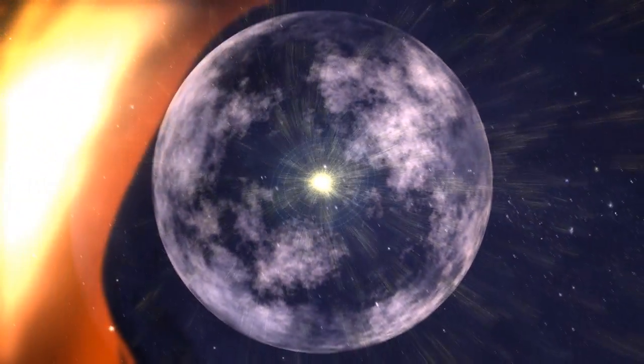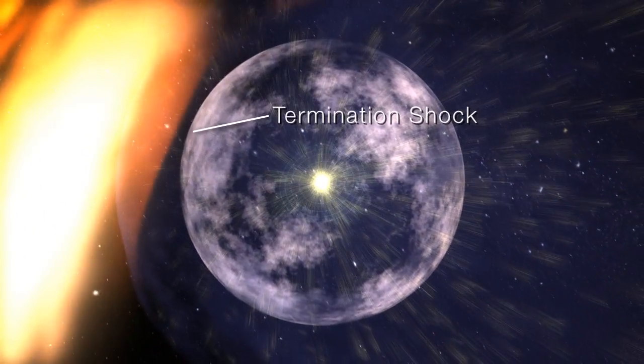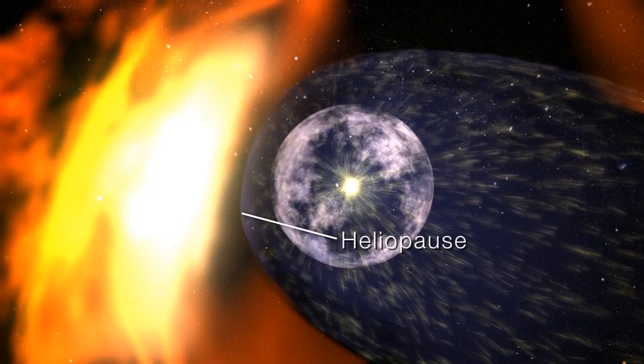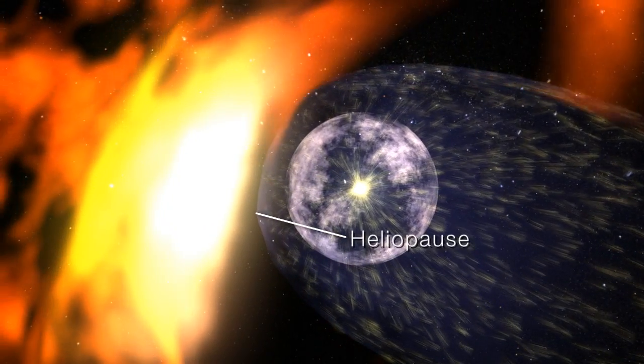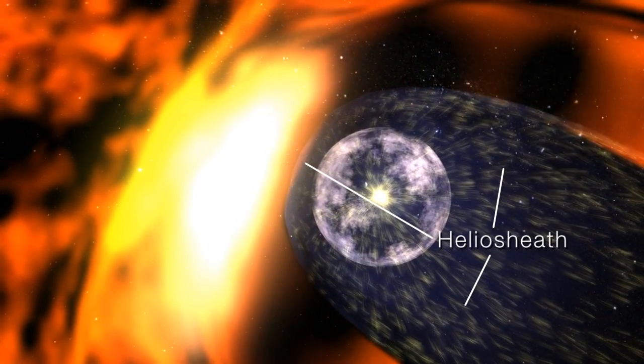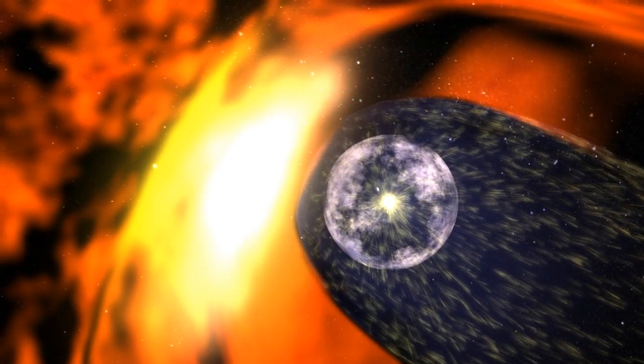The region begins with the termination shock, where the solar wind abruptly slows down. It ends with the heliopause, the boundary between the solar wind and interstellar space. Between the two is the heliosheath, a teardrop-shaped region sculpted by the pressure of the interstellar medium.